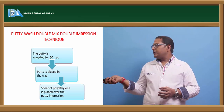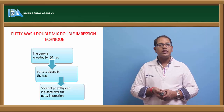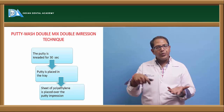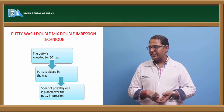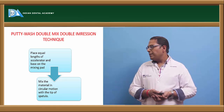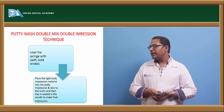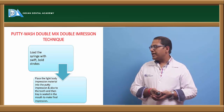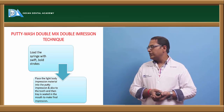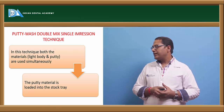The putty is kneaded for 30 seconds, placed in the tray, and a sheet of polyethylene is placed over the putty. Either a polyethylene sheet is placed or the putty impression is trimmed — either option works. Place equal lengths of accelerator and base on a mixing pad, mix the material in circular motion with the tip of the spatula, load it into the syringe, and with swift bowl strokes place the light body into the putty impression and also onto the prepared tooth so that the material flows and records the minute details.